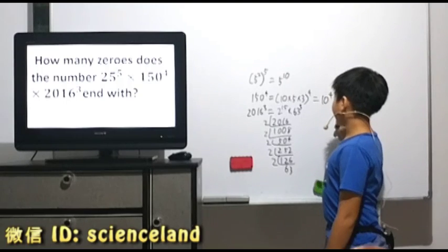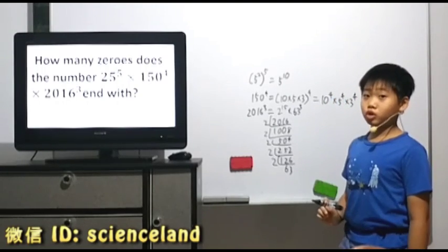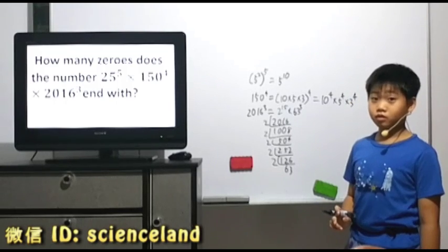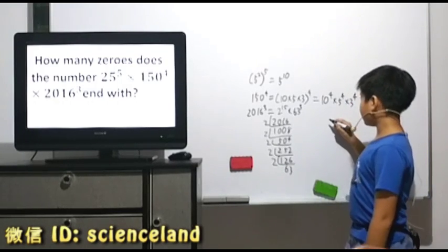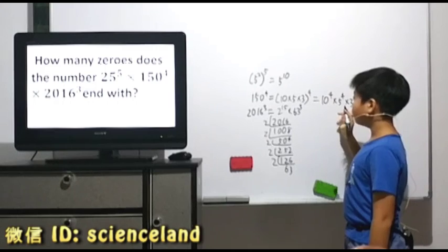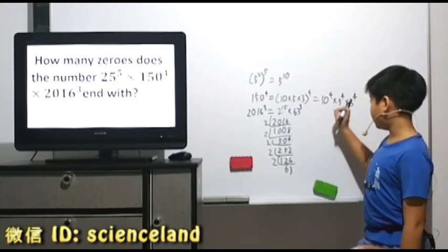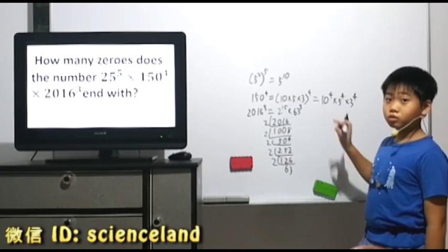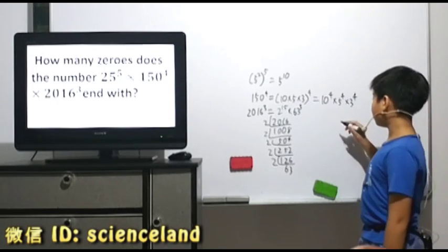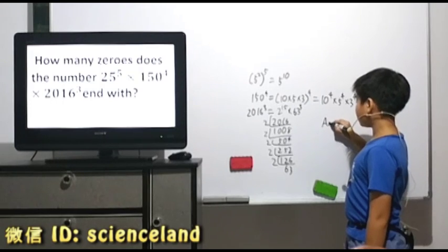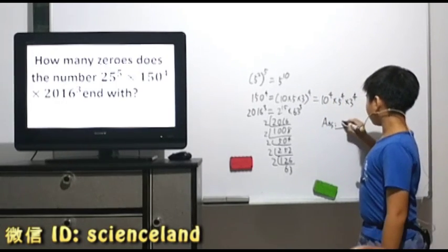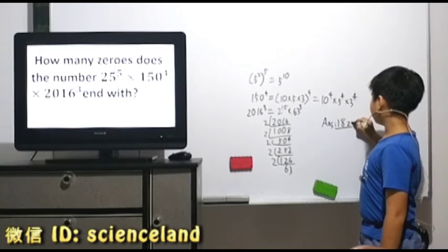Now, we can get 5 to the power of 14 times 2 to the power of 15. So, we can get 14 of zeros first. Then, 14 plus another 4, which is 18. So, the answer is 18 zeros.